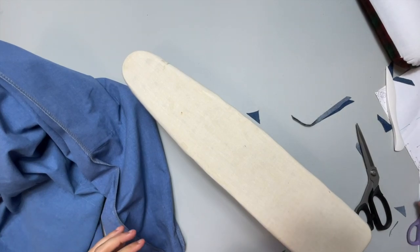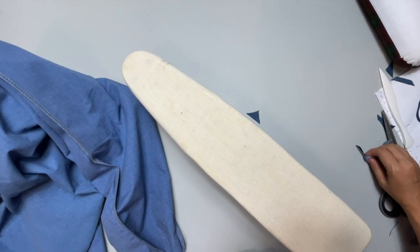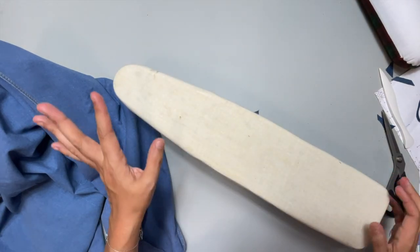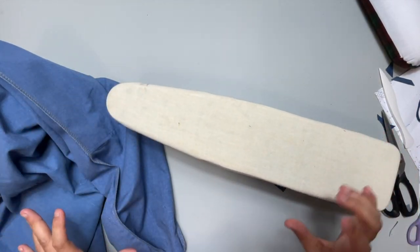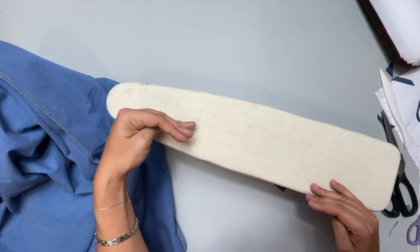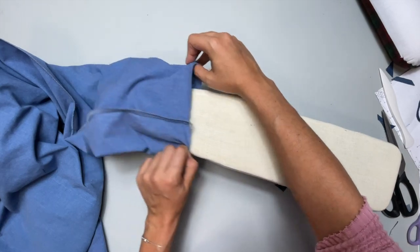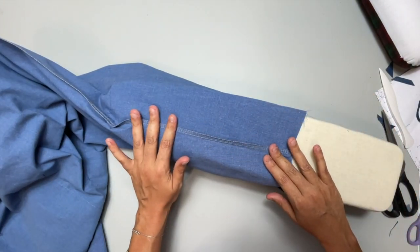I love that I get to use so many of my fun tools on this project. This is called a sleeve board and it's a small little ironing board so that you can put your sleeve on and press the under seam. It also works really great for pants and seams, so I just slid the leg on here and pressed them all to one side.